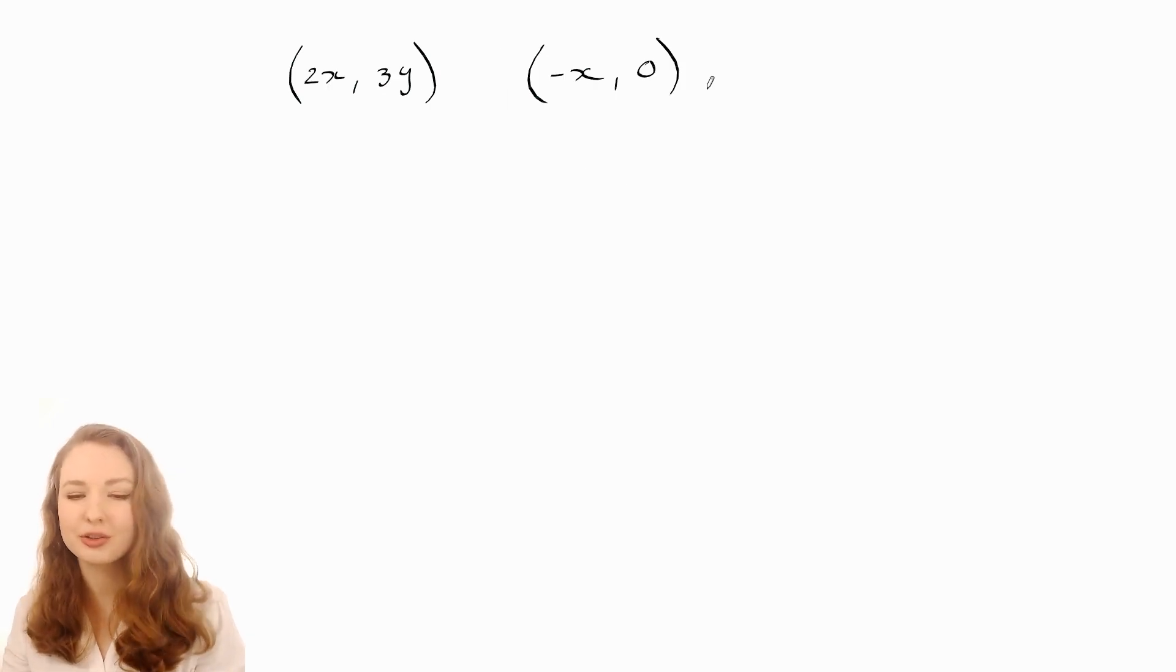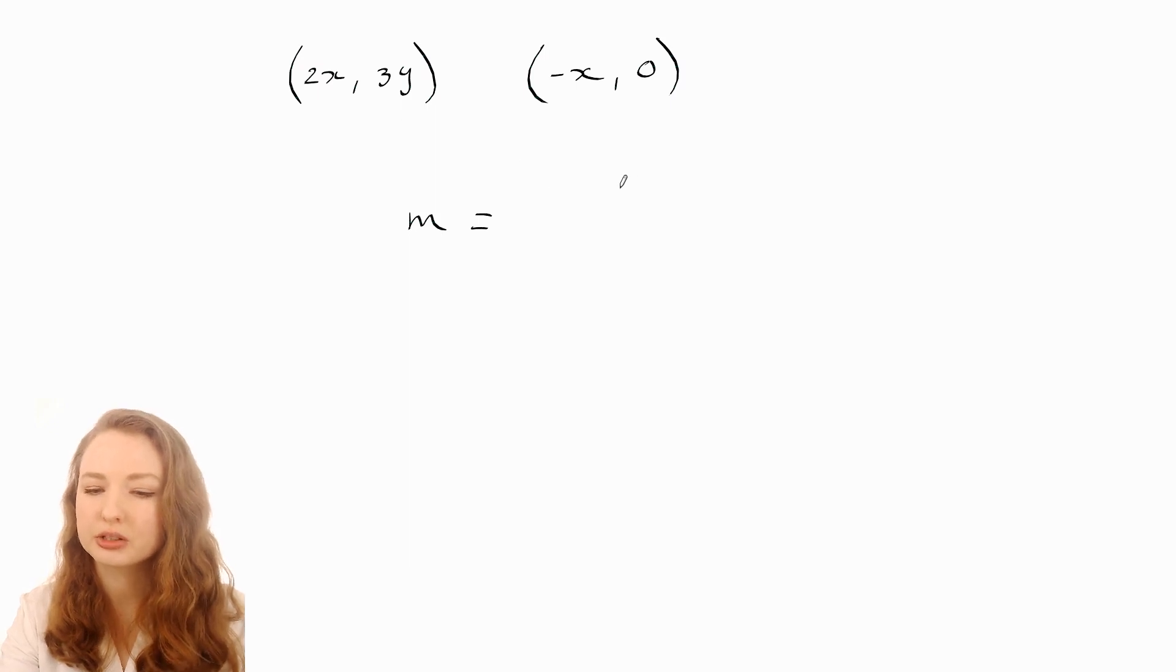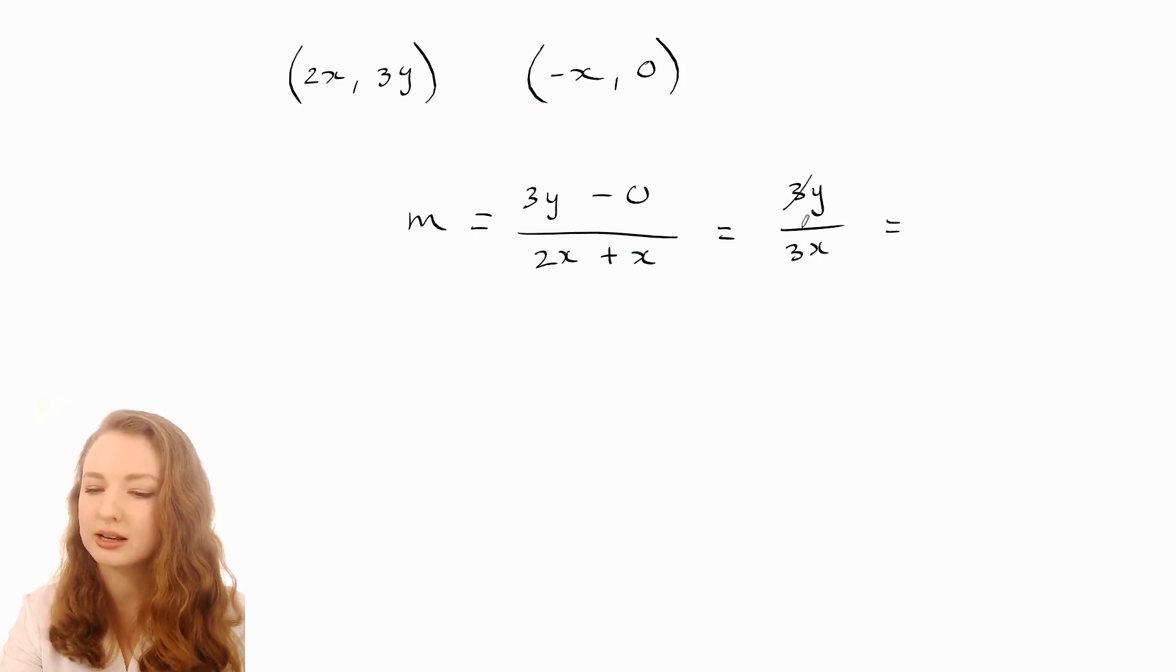I'll just do one more example with some algebra thrown in. Let's say we want to work out the slope through those two points. We do one of the y's minus the other one—let's do 3y minus zero. Then on the bottom, if I picked 3y first, I have to do this one first on the bottom. So it's 2x minus negative x, which is the same as plus x. That makes 3y over 3x, which simplifies and cancels the three to get y over x. That would be the slope.